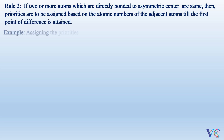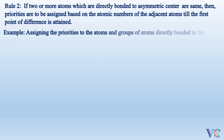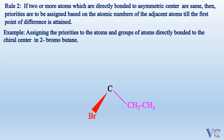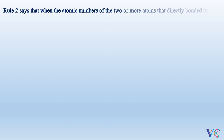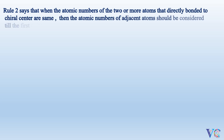Example: Assigning the priorities to the atoms and groups of atoms that are directly bonded to the chiral center in 2-bromobutane. The chiral carbon is bonded to bromine, an ethyl group, a methyl group, and hydrogen. Atomic number of bromine is 35 and hydrogen is 1, so bromine gets first priority and hydrogen gets fourth priority. Now we have to assign priorities to the ethyl and methyl groups according to Rule 2, which says that when the directly bonded atoms are the same, the atomic numbers of adjacent atoms should be considered till the first point of difference is reached.